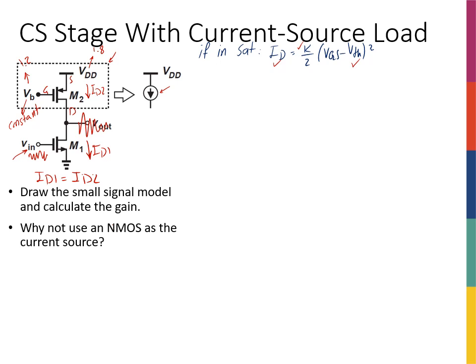Let's draw the small signal of this thing. I start with VIN, I'm going to show this signal source just for clarity. It comes to the gate. Source is connected to ground, and between source and drain I have the R0. Let's call this VGS1 because I have M1 and M2, so this is going to be GM1 VGS1.